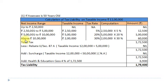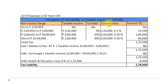The last range is above Rs. 10 lakh. Our taxable income is Rs. 12 lakh, so income above Rs. 10 lakh is Rs. 2 lakh (Rs. 12 lakh minus Rs. 10 lakh). Tax rate applicable is 30%; computation: Rs. 2 lakh × 30% = Rs. 60,000. Total tax amounts to Rs. 1,72,500.